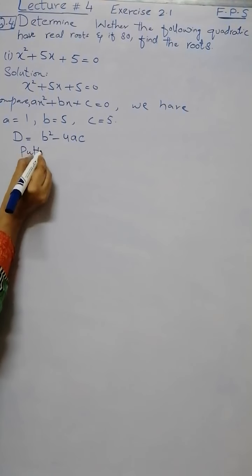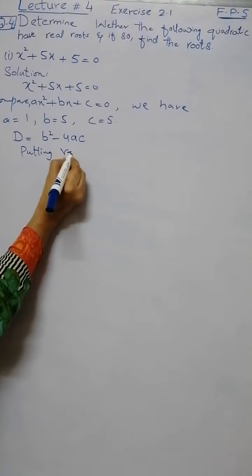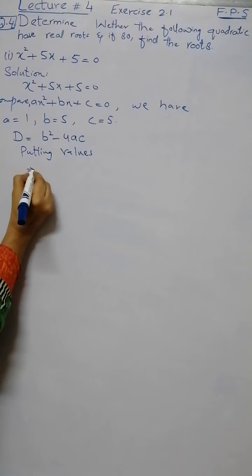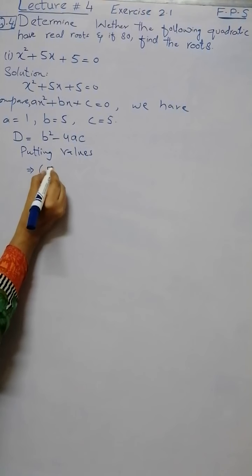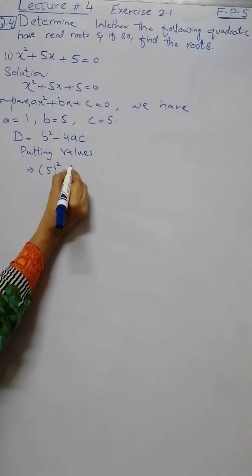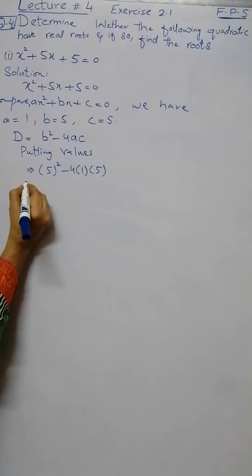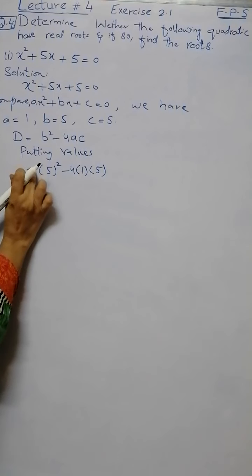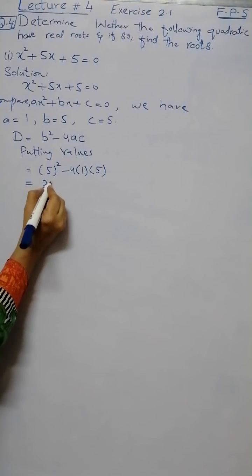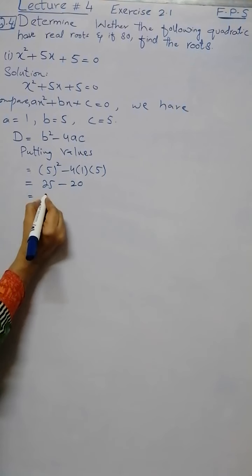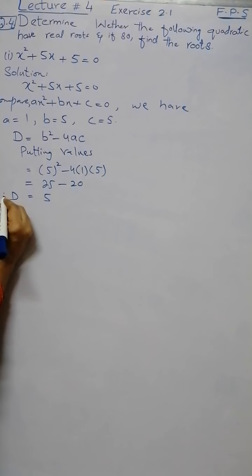By putting the values of a, b, c, we have the value of b is 5, a is 1, c is 5. So here we have 25, 4 times 5 is 20, the discriminant is 5.